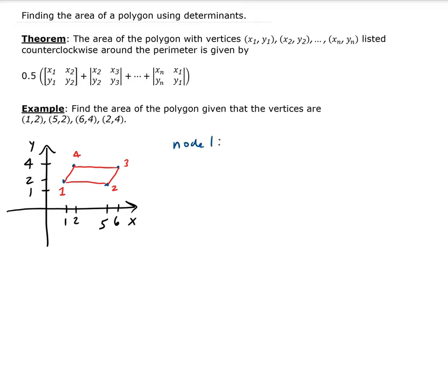Node 1 was at (1,2). Node 2 is (5,2). Node 3 is (6,4). And finally, node 4 is (2,4). So we have node 1, node 2, node 3, and node 4.